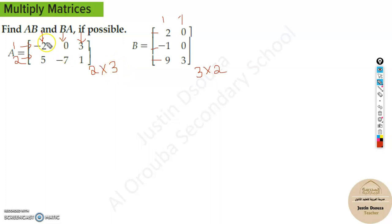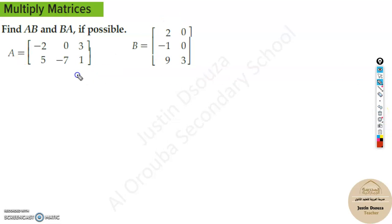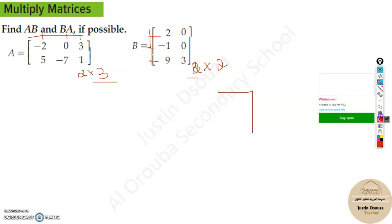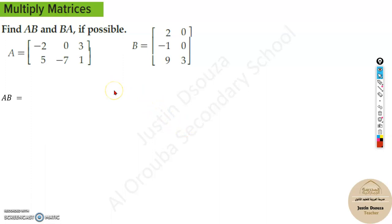Before multiplying, you need to check the dimensions of the matrices. Look at the second dimension (the columns) of the first matrix — this number must match the rows of the second matrix. One easy method I use is to draw an inverted L shape on top of the dimensions. If those numbers match, you can multiply. For example, a 2×3 and 3×2 matrix — these two middle numbers must be equal. If they don't match, you cannot multiply those matrices.